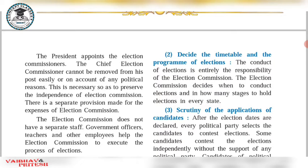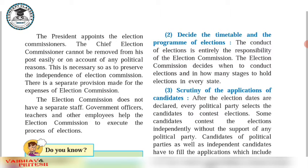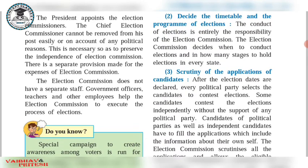Political parties might try to remove the Election Commissioner if he does not work in their favor, so the Constitution provides that the President appoints the Chief Election Commissioner but cannot remove them. Removal requires a separate process — through Lok Sabha. There is also a separate provision for the expenses of the Election Commissioner. The Election Commission does not have a separate permanent staff.